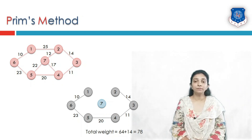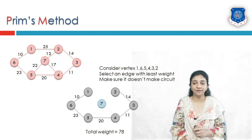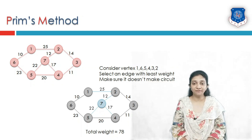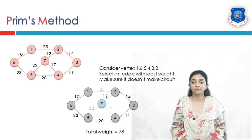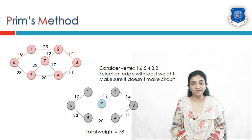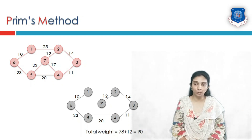Now we consider all vertices: 1, 2, 3, 4, 5, and 6, and their associated unvisited edges. The candidate edges are 25, 12, 22, and 17. Edge 12 is the minimum weighted edge, so we keep only this edge and reject the others. Total weight is now 78 plus 12, equal to 90.